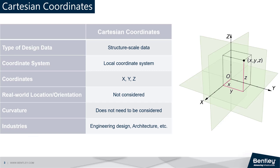Cartesian coordinates are used to define the position of elements in a design file. They work best with structure-scale data, which refers to the data that is collected and analyzed at a small localized scale, typically on the order of buildings, stadiums, and other similar structures.